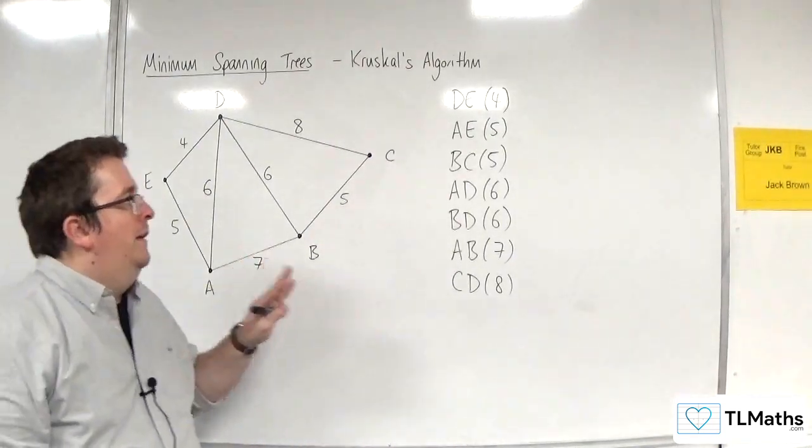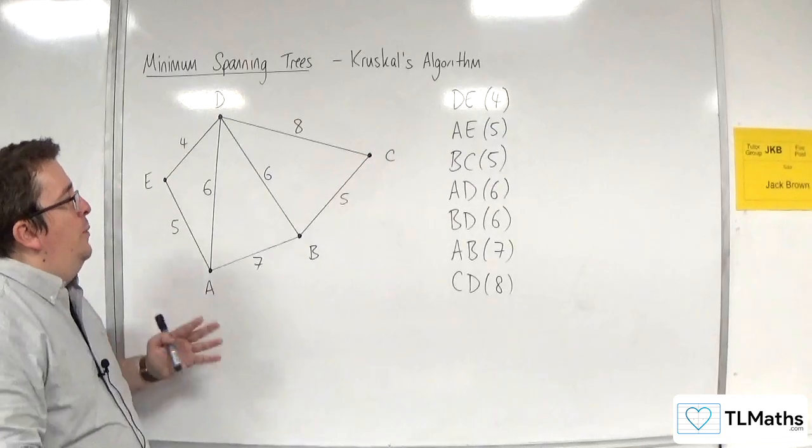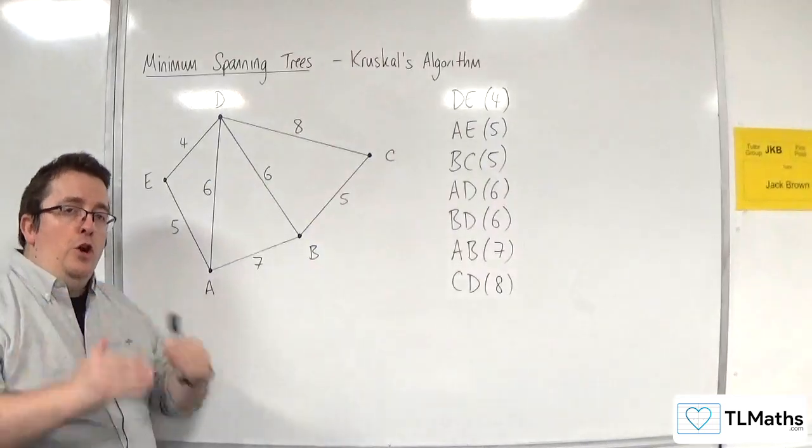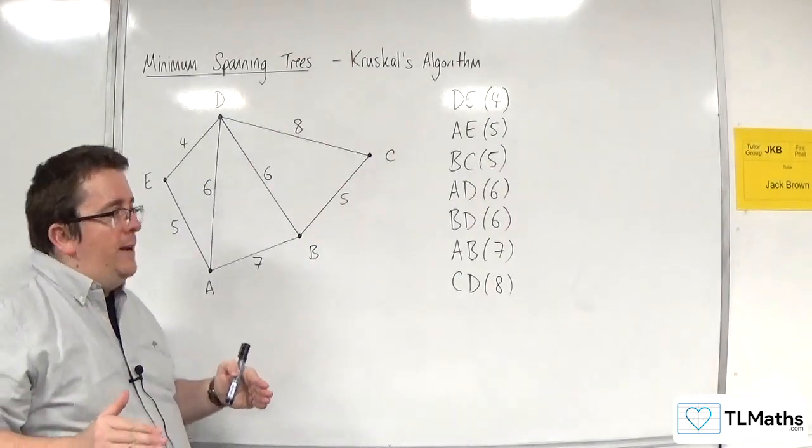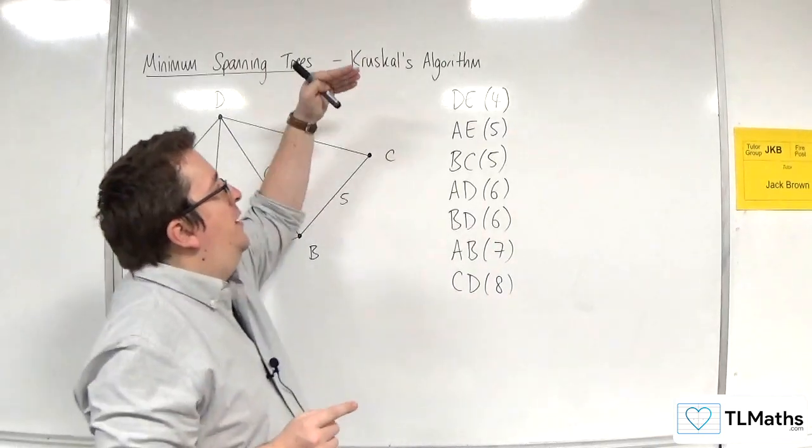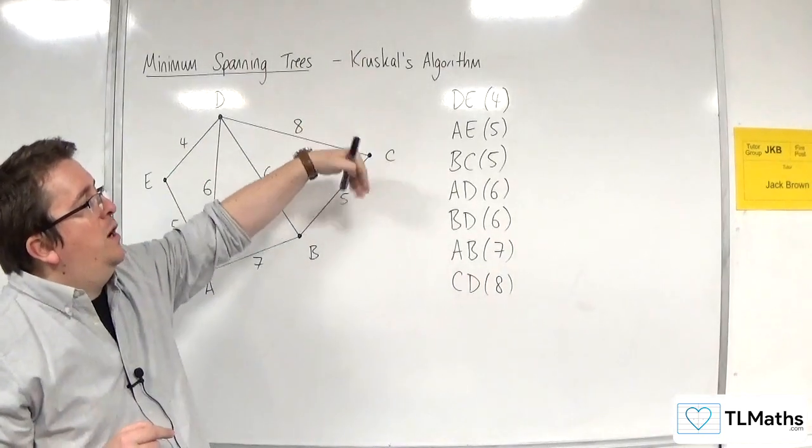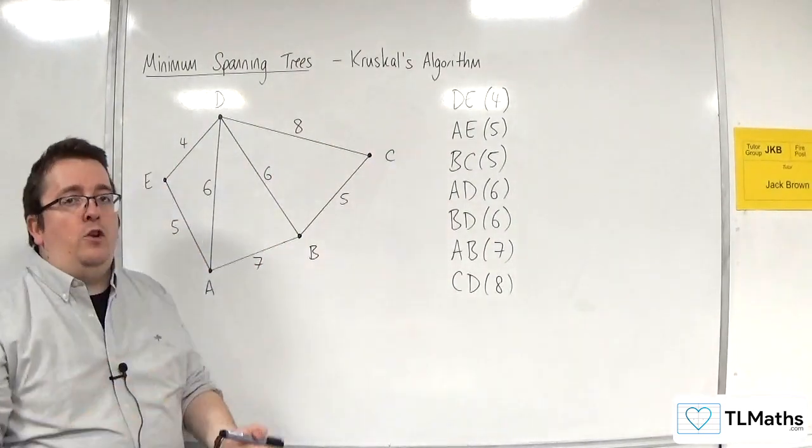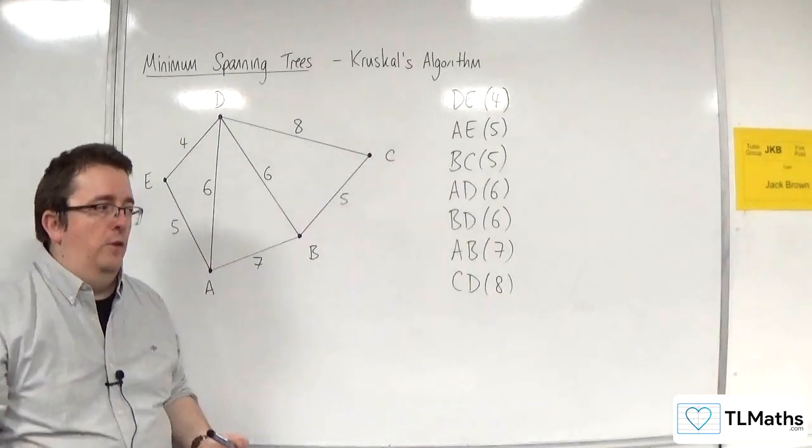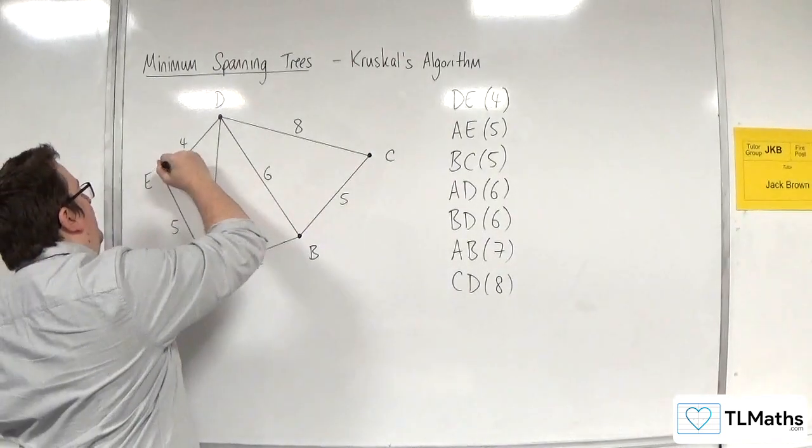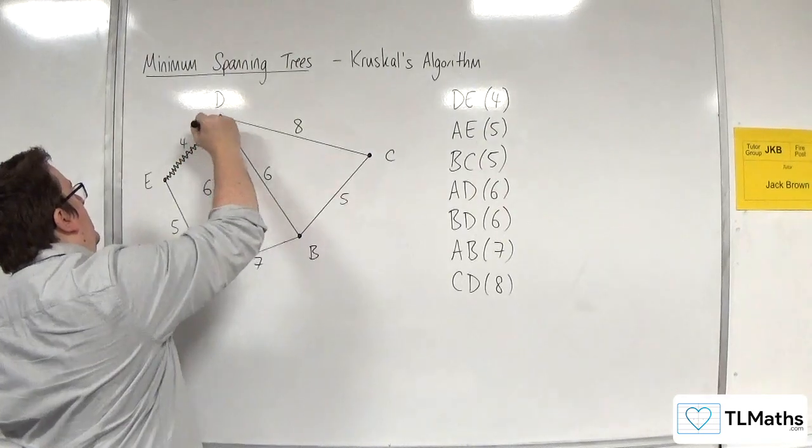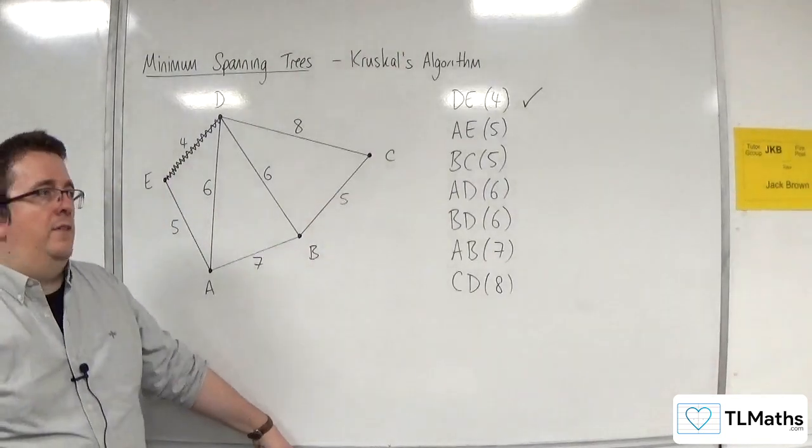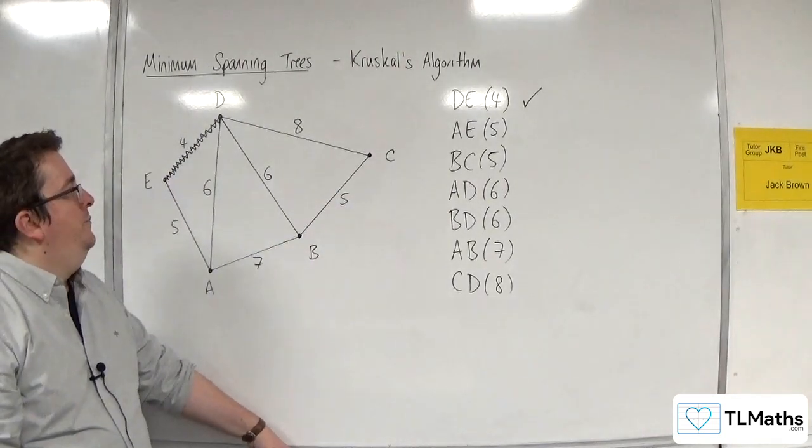So let's start off. We know with a minimum spanning tree, we need to connect all of the vertices and we want to make sure that there are no cycles. So what we do is we start from the top of the list and we work our way down. We start with the top and go, right, DE. If I select that edge, will it create a cycle? No, it doesn't. So that's fine. I will select DE and that will be my first edge. So I'm going to have that one. So next to it, I'm going to tick it. That's what I want.